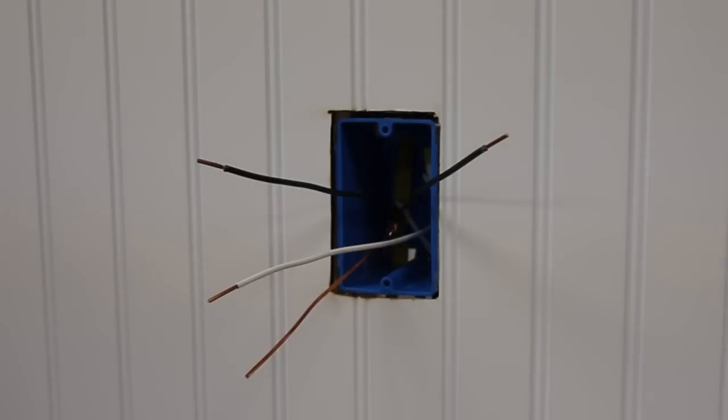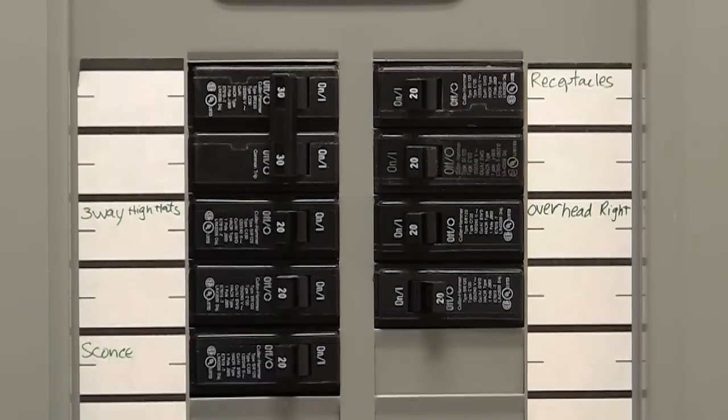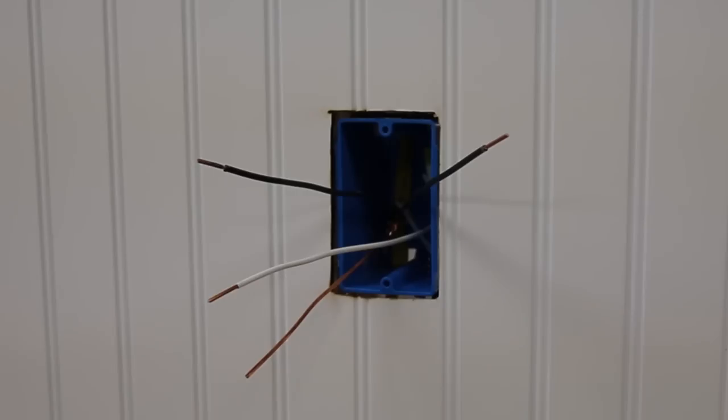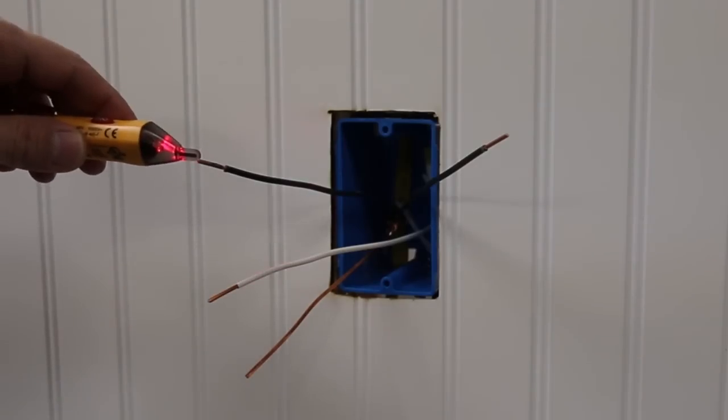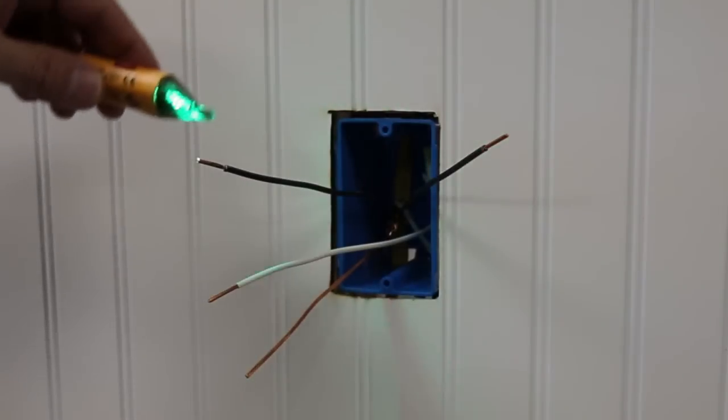Now, we need to identify the hot wire. To do this, turn the circuit breaker back on. Carefully use the voltage tester to test each wire. The hot wire will be indicated by the tester.